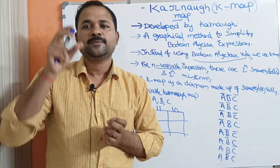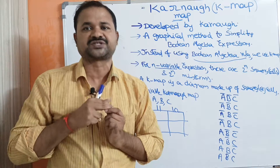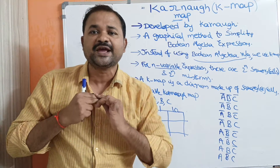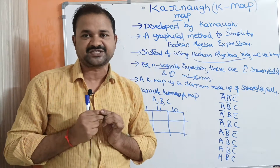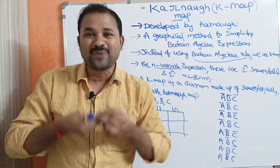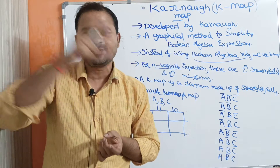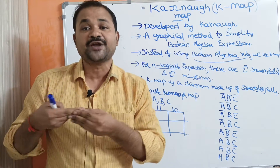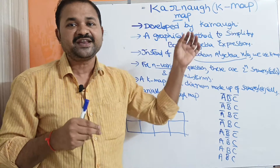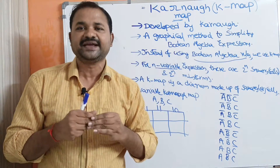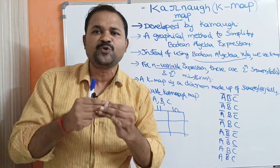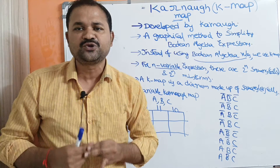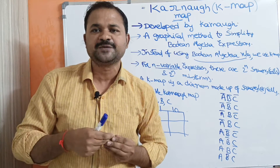Previously we have used Boolean algebra rules in order to simplify or minimize Boolean algebra expressions. But it is a somewhat complex process to remember all those theorems or Boolean algebra rules. Whereas the Karnaugh map is a very simple and very systematic approach in order to simplify Boolean algebra expressions.